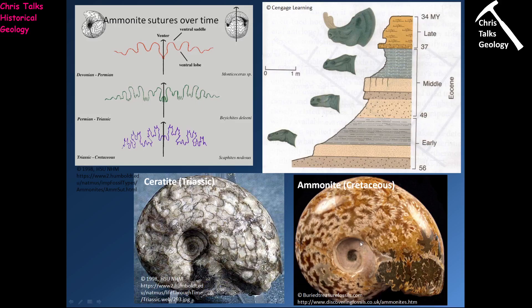Here we have a couple of examples of ammonoids. Here's an example from the Triassic — a ceratite. You can see we have these lines on the surface; these are called suture lines. The suture lines are quite simplistic — you can see the curve there, a little bit of topography, but on the whole they're quite straightforward.